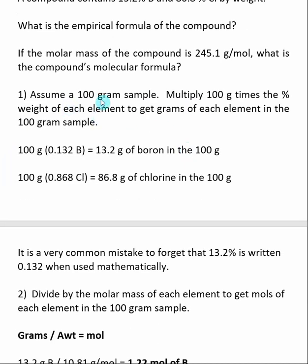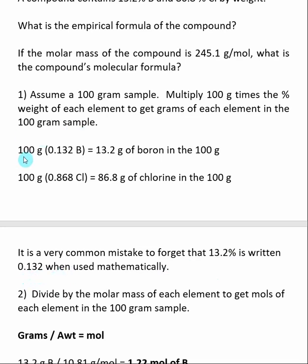In the first step, you want to assume a 100-gram sample. This is arbitrary — you can use other weights, but 100 grams is convenient. We then multiply that 100 grams by the percent weight of each element to get the number of grams of each element in that 100-gram sample. Remember, we are dealing with the mathematical percent, so 13.2% becomes 0.132 in a mathematical calculation.